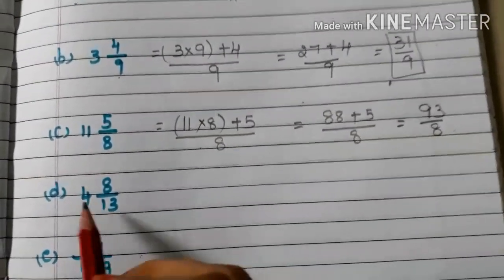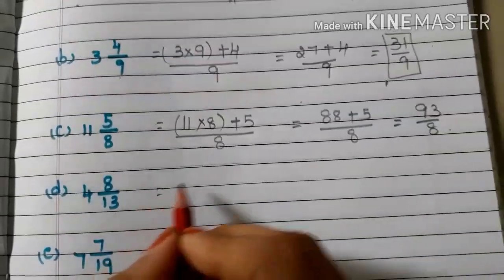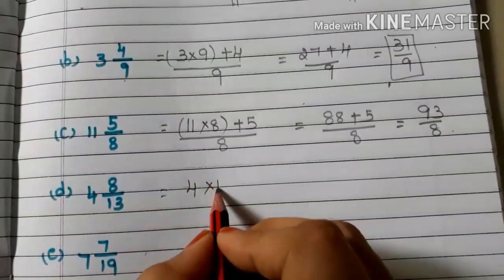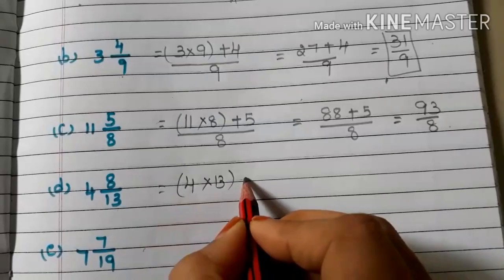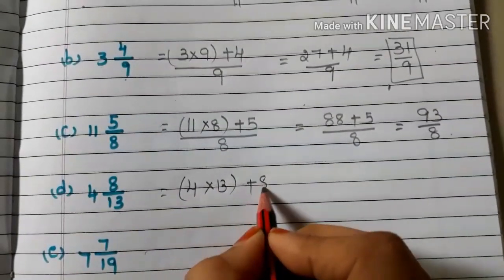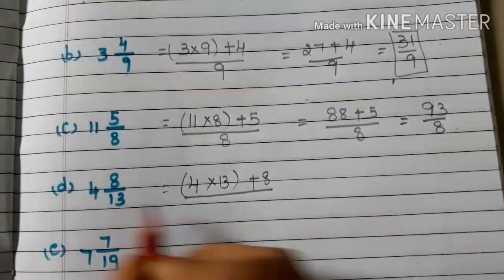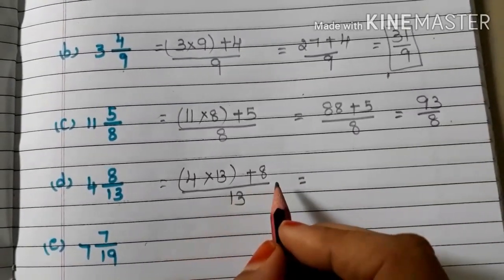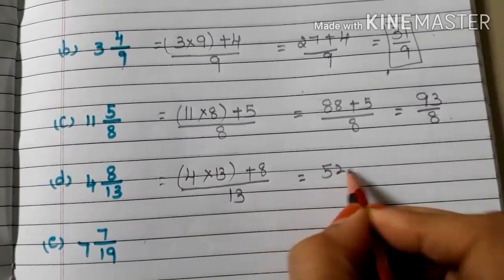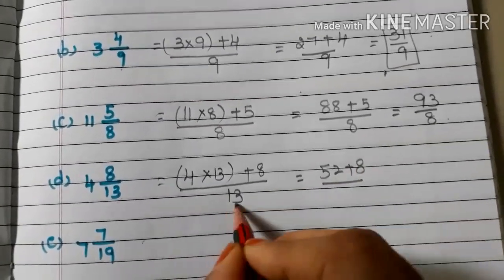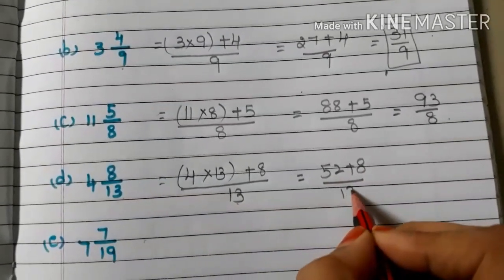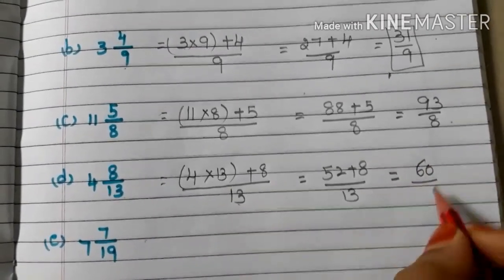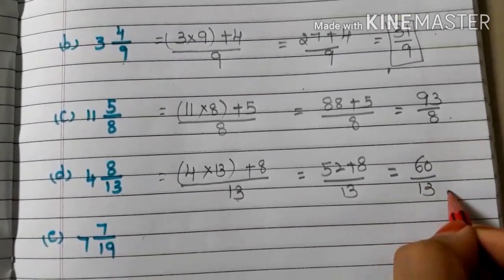D: 4 and 8/13. Whole number into denominator plus numerator, by denominator 13. 4 thirteens are 52, plus 8, by 13. 52 plus 8 is 60/13.